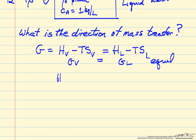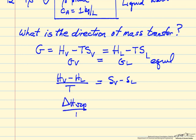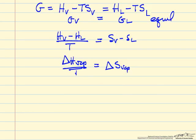If we rearrange this equation, we notice H vapor minus H liquid over temperature is S vapor minus S liquid, which means delta H of vaporization over temperature is equal to delta S of vaporization. Heat of vaporization divided by temperature is the entropy change of vaporization. This is how we originally derived entropy,